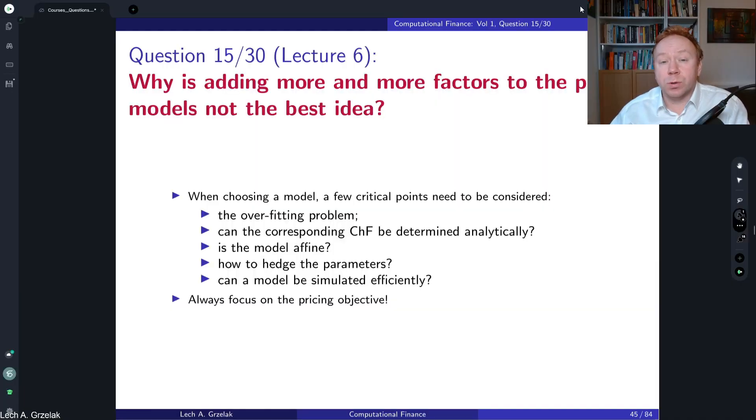Hello everyone, welcome to the series questions and answers based on the course Computational Finance. Today we have question number 15 out of 30 and this question is based on lecture number 6. The question is as follows: Why is adding more and more factors to the pricing model not the best idea?